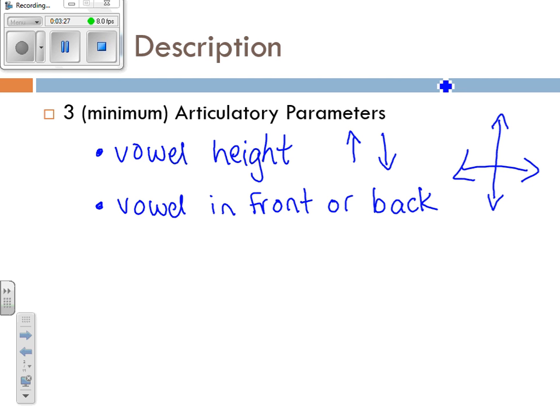That gives us a position for the tongue that can be put on a grid with different dimensions — vertical versus horizontal position. The final main description you will use is lip shape. When you want somebody to smile for a picture, you ask them to say 'cheese,' with a nice long 'ee' vowel, because our lips spread so you can see the teeth. So lip shape can play an important role.